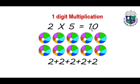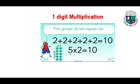Now you can understand that in multiplication questions we add the number repeatedly to get the answer. Here we have five groups of two — two dots, two dots, two, two, and two. We are adding two five times: one, two, three, four, five. So five multiplied by two is equal to ten.